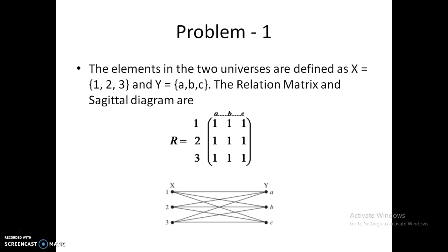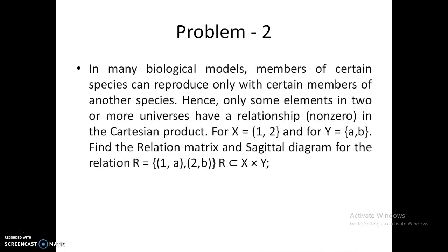Now let us see a practical problem. In many biological models, members of certain species can reproduce only with certain members of another species, so only some elements in two universes have a relationship — meaning only some pairs appear in the Cartesian product. For example, if set X has elements {1, 2} and set Y has elements {a, b}, let us find the relationship matrix and sagittal diagram for the relation R = {(1,a), (2,b)}.